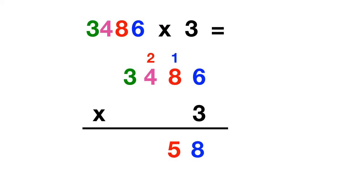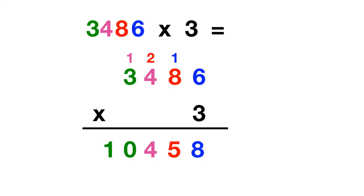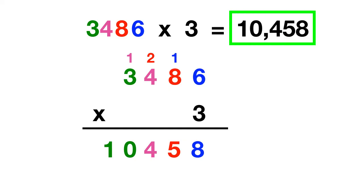Next you can multiply 3 times 4 hundreds. Well, 3 times 4 is 12, but you have to add in these 2. 12 plus 2 is 14. Finally you multiply 3 times 3000. 3 times 3 is 9, but 9 plus 1 gives you 10. So 3486 times 3 gives you 10458.